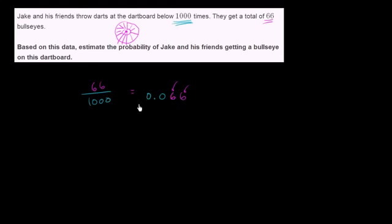And the reason why you might say, well, why isn't this actually the probability? Why does it say estimate the probability? Why can't I say that the probability is actually 0.066?